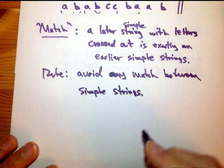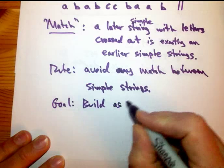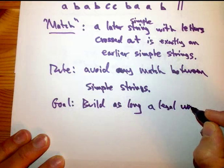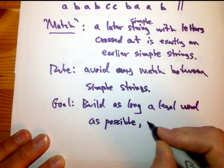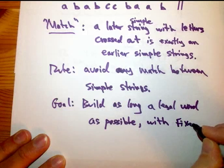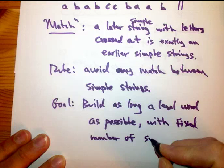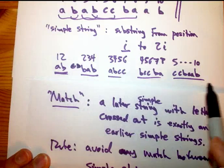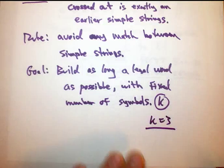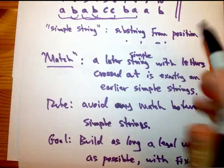And here's the rule. So this would in fact be totally illegal in this puzzle. The one rule is avoid any match between simple strings. And the goal is to build as long a legal string as possible, a legal word, with a specified number of letters, with a fixed number of letters or symbols that you use.